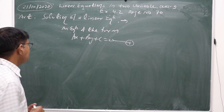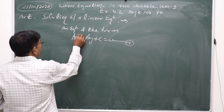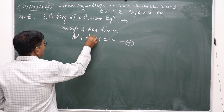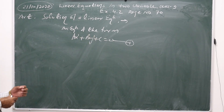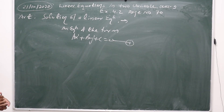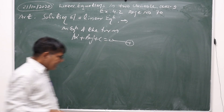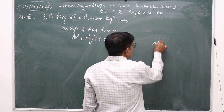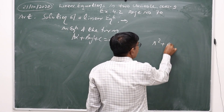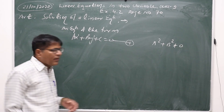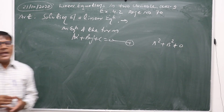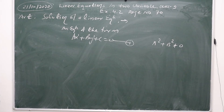It is called linear because the highest power of both variables x and y is 1. Here, the coefficient of x is a, the coefficient of y is b, and c is the constant. The condition is that a squared plus b squared is not equal to 0 — that is, a and b both cannot be zero together.